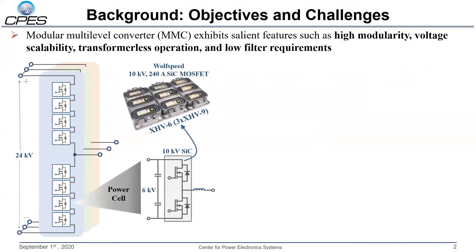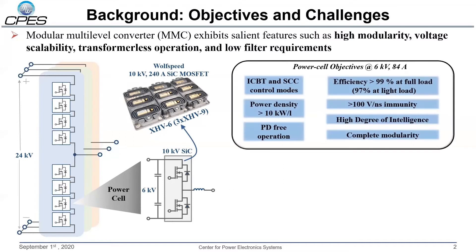MMC's fundamental piece is the power cell. If the kernel part is a silicon carbide MOSFET, the design is capable of achieving high efficiency and power density. Power cell objectives are capability for ICBT converter and switching cycle control. These enable extreme reduction in passive component size, power density of 10 kW per liter, partial discharge-free operation, 99% efficiency, and high common-mode transient immunity.